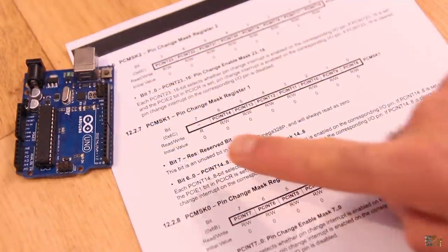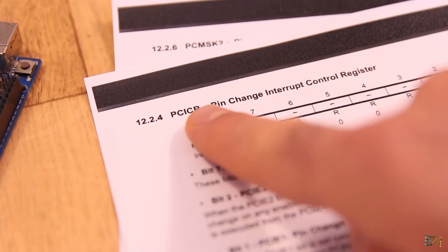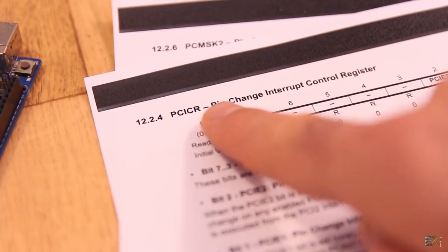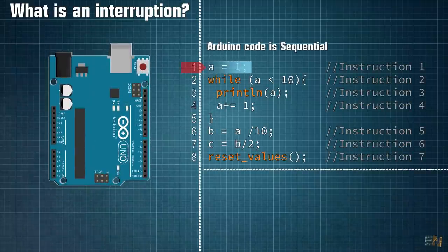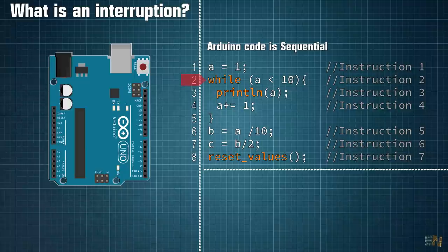We have a few registers that control the interruptions of these ports. But first, what is an interruption? You should already know that the Arduino code is sequential, running in series, meaning that till one instruction is not over, we can't execute the next instruction.